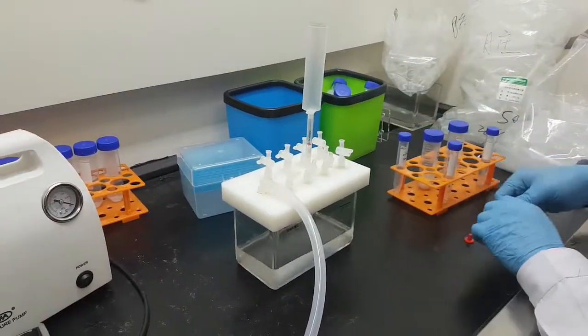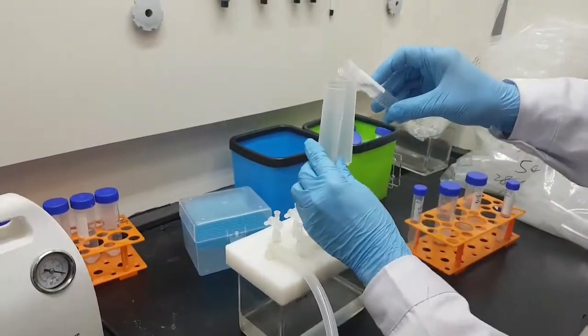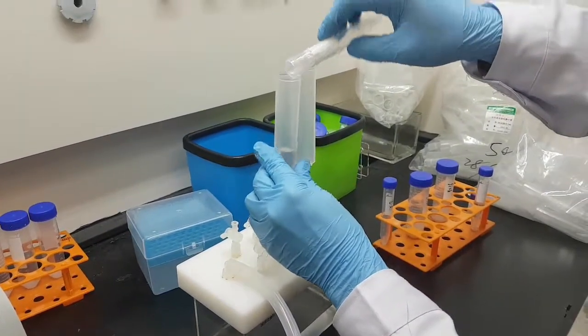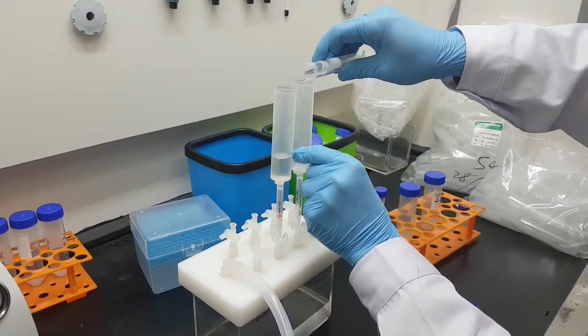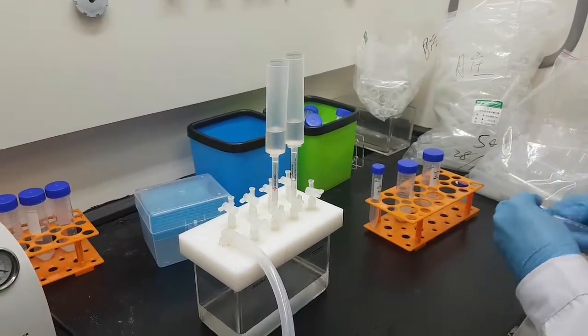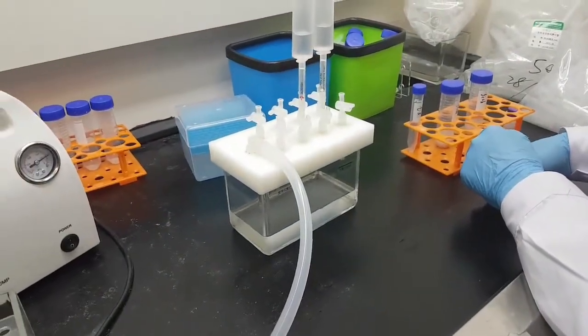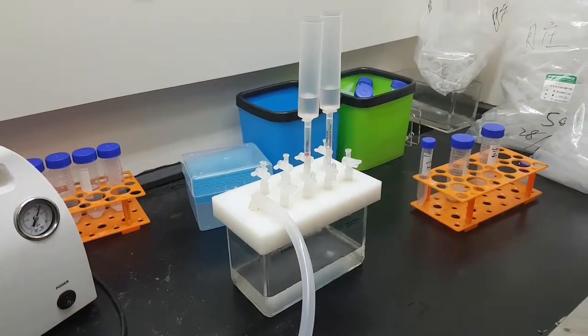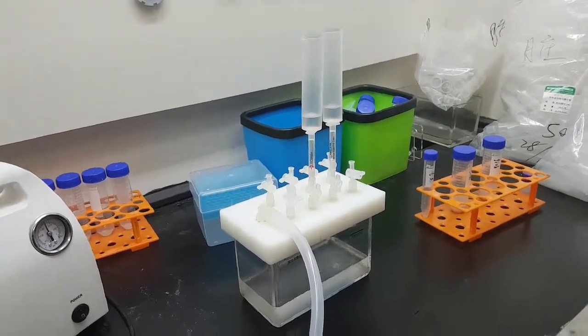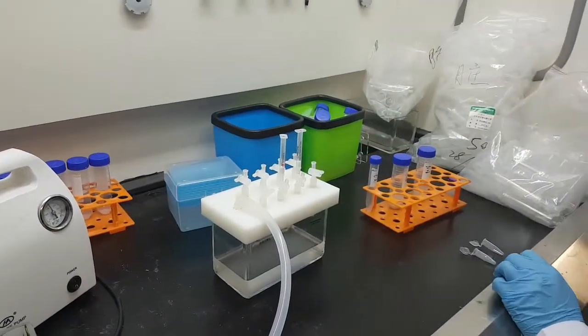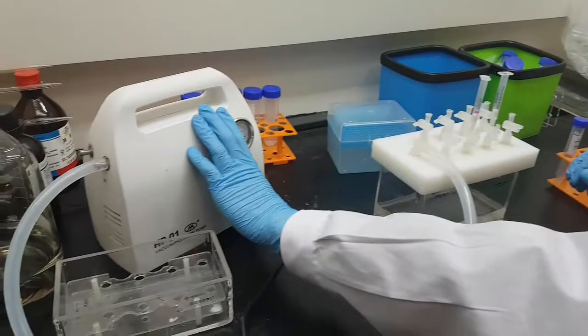Connect the extraction units for the supernatant. Turn on the pump and make sure there is enough pressure. Let the liquid flow through the extraction column and wait. Remove the syringe, release the pressure, and turn off the pump.